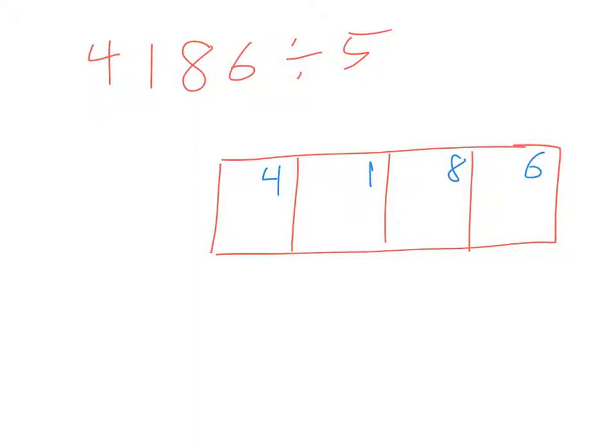Next, we take our divisor and put it outside of the box to the left. We have our four steps: divide, multiply, subtract, bring down. Instead of bringing down though, we're going to bring the number up. Let me show you how.